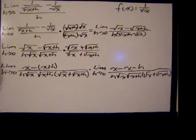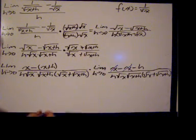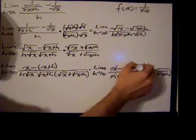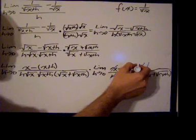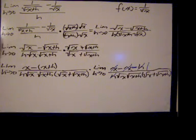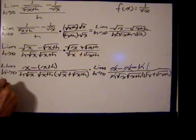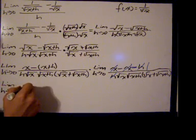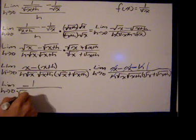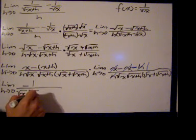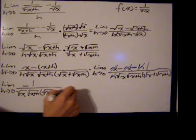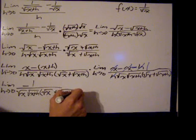Distributing that negative gives x minus x minus h. Now x minus x is 0, and then there's an h over h leaving a negative 1. So I have the limit as h goes to 0 of negative 1 over the square root of x times the square root of x plus h, times the square root of x plus the square root of x plus h.